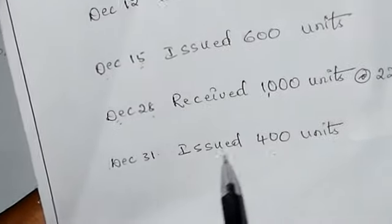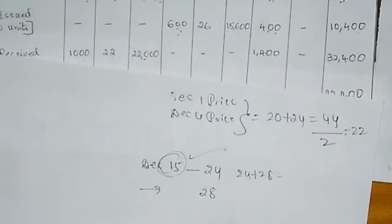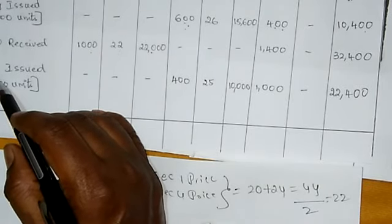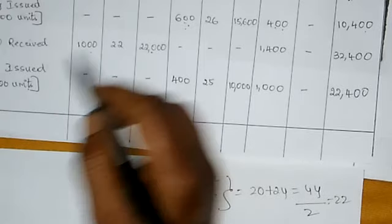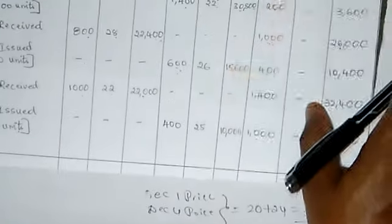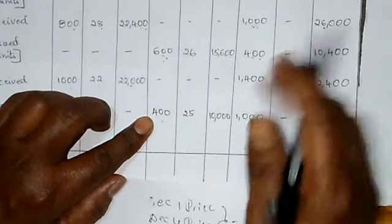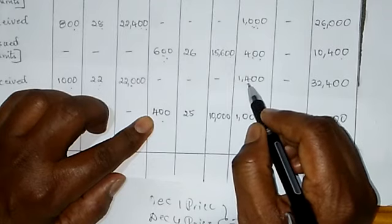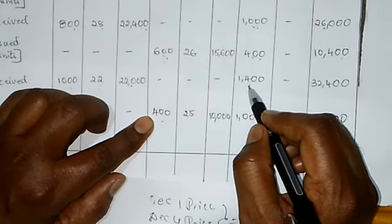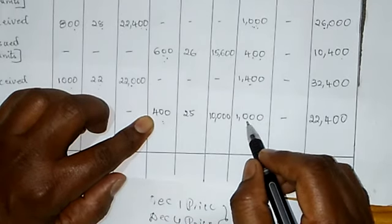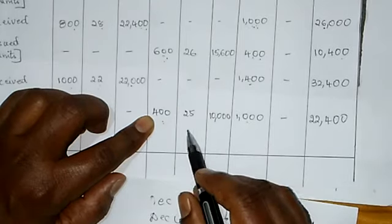Seventh transaction: December 31st - Issued 400 units. Enter December 31st. In particulars column write 'Issued'. Issue column: 400 units. Balance quantity before issue is 1400 units. Average price calculation: the two prices considered are 28 rupees (December 12th) and 22 rupees (December 28th).